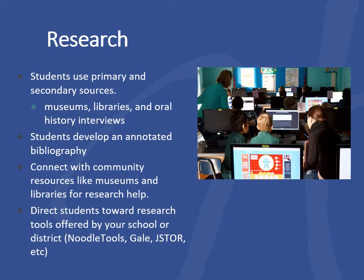The next and most important step of the project is the research. Students are expected to use both primary and secondary sources to inform the story they're telling, and they will interpret those primary sources on their own and use them as evidence for the argument that they develop. There are lots of places that students can go to find primary and secondary sources, and we have curated lists of excellent websites to use both on our website in the student section and in our Google Drive teacher resource packet. Students will create an annotated bibliography, and for a lot of them it might be their first time doing one, but we have models and scaffolds to help them along. As teachers, you can connect with museums and libraries to see if they offer research help, and you can direct students toward the research tools that your school or school district offers, for example bibliographical tools like NoodleTools or EasyBib, or research sites like Gale or JSTOR.